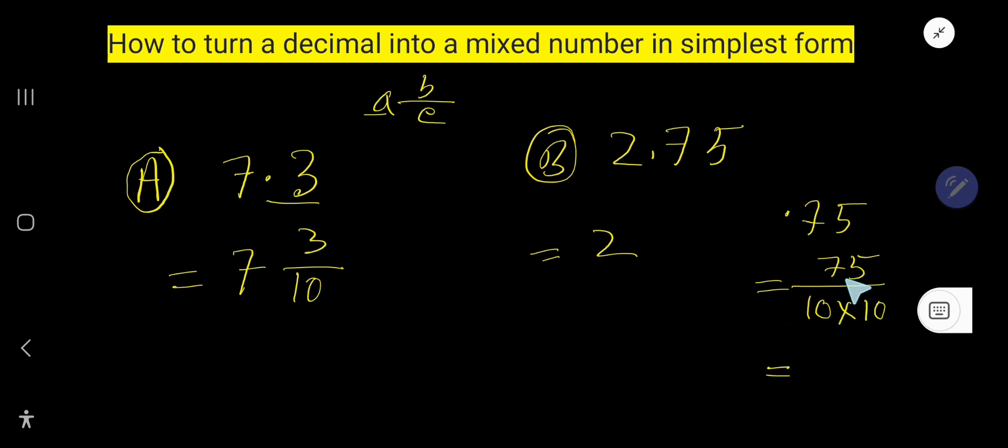But you can break this 75 as 5 times what? Look here, the last digit is 5, so it is divisible by 5.